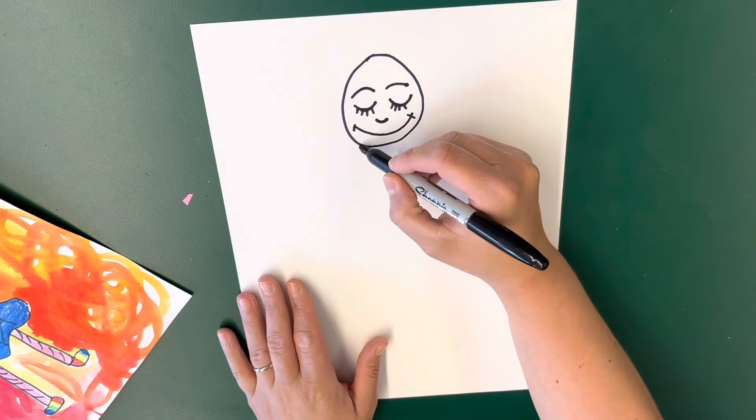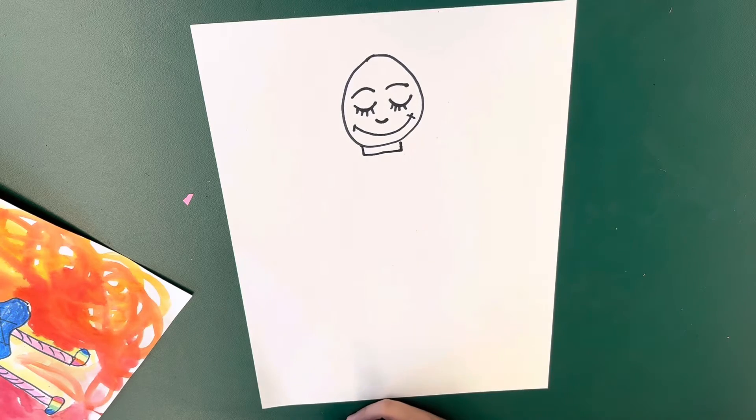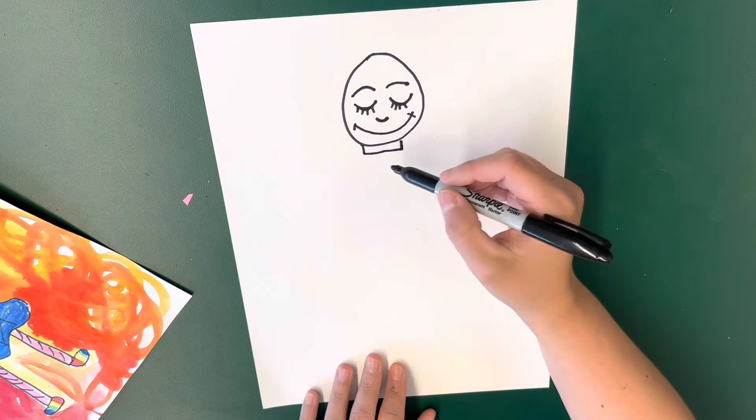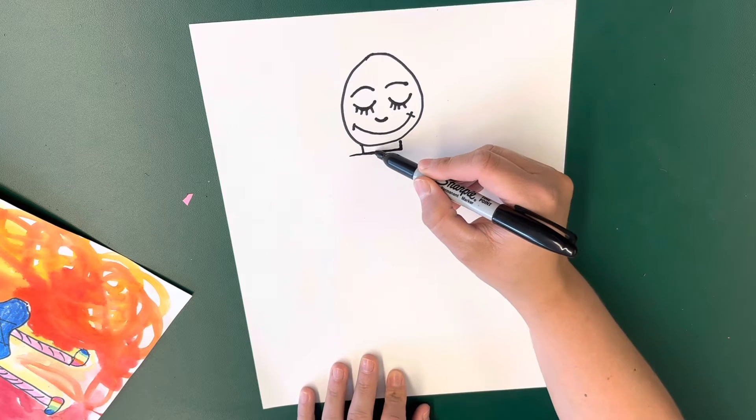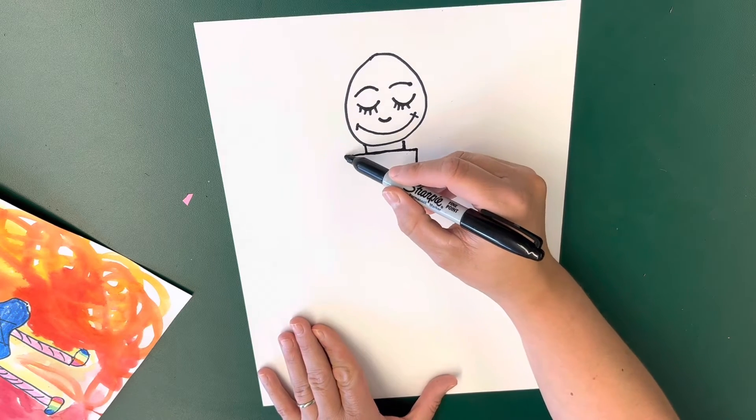Now below my head I'm going to draw a rectangle, and I'm going to draw another rectangle for the body, so I'm going to come out and down.